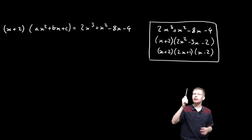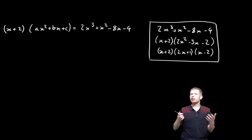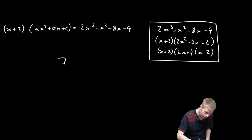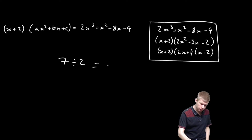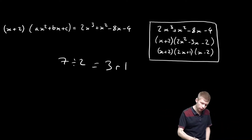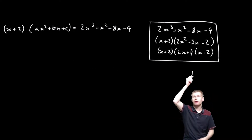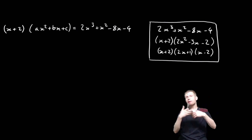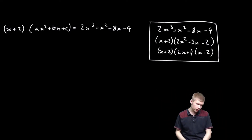It doesn't help us with anything like remainders, because sometimes you might divide a number — for example, you might divide 7 by 2. Well, 2 doesn't go into 7 exactly; it's going to be 3 remainder 1. So in the same way we could have remainders when we divide cubics by factors. This method is great if it goes in exactly, but if it doesn't go in exactly, it doesn't help us at all.